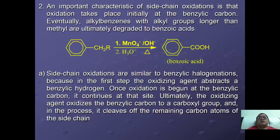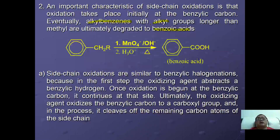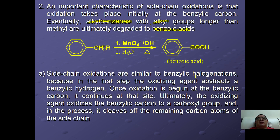An important characteristic of side chain oxidation is that oxidation initially takes place at the benzylic carbon. Eventually, all alkyl groups, no matter how long the chain, will be oxidized to become benzoic acid. For example, regardless of whether the side chain is CH2R or any longer group, reaction with alkaline KMnO4 followed by acidic hydrolysis will yield benzoic acid, with carbon dioxide and water as side products.